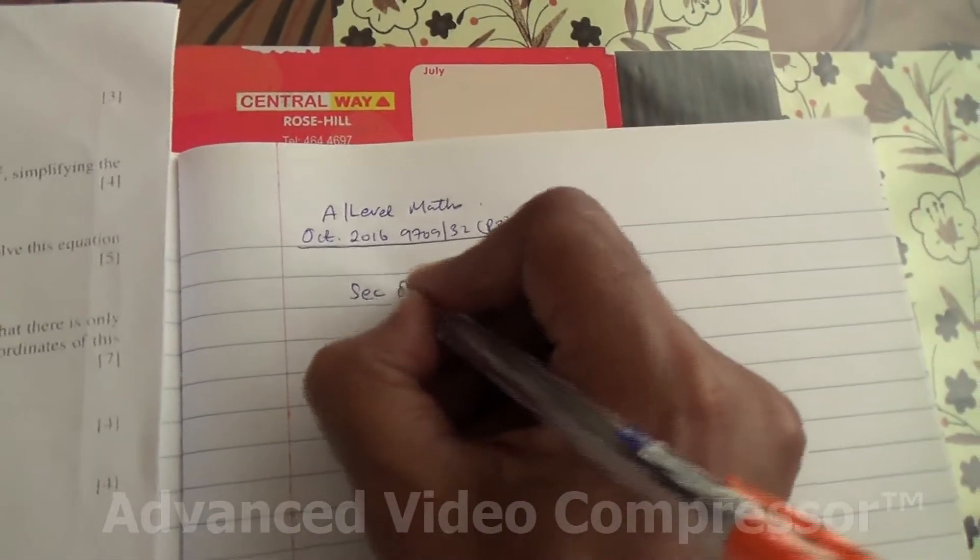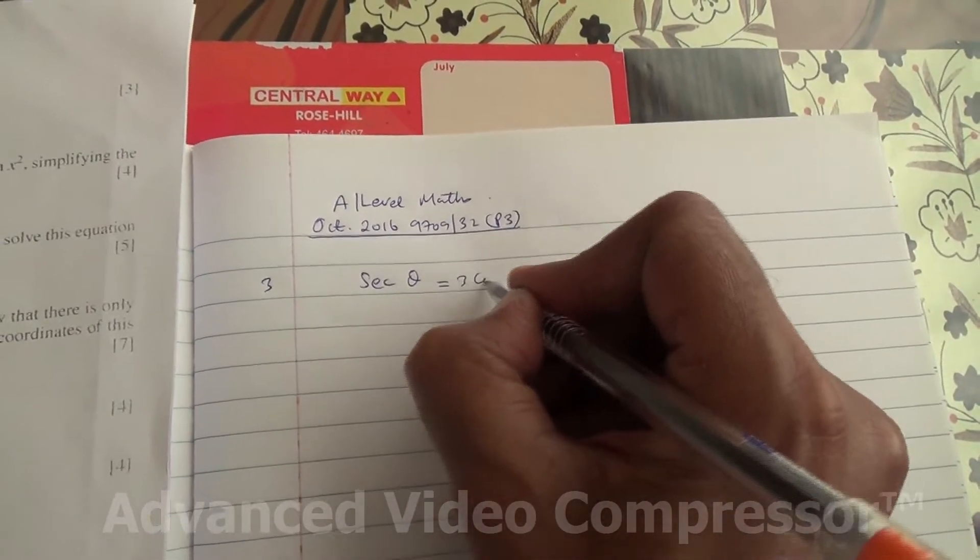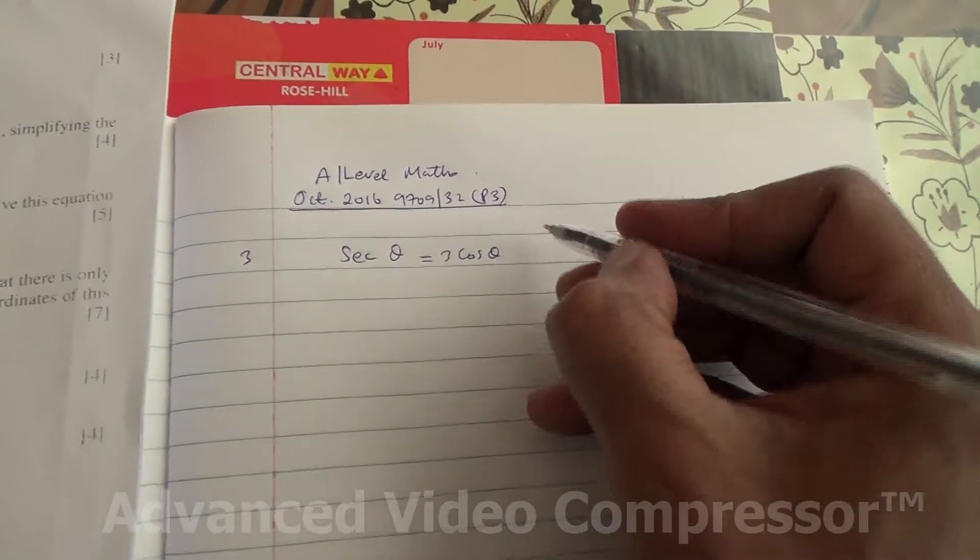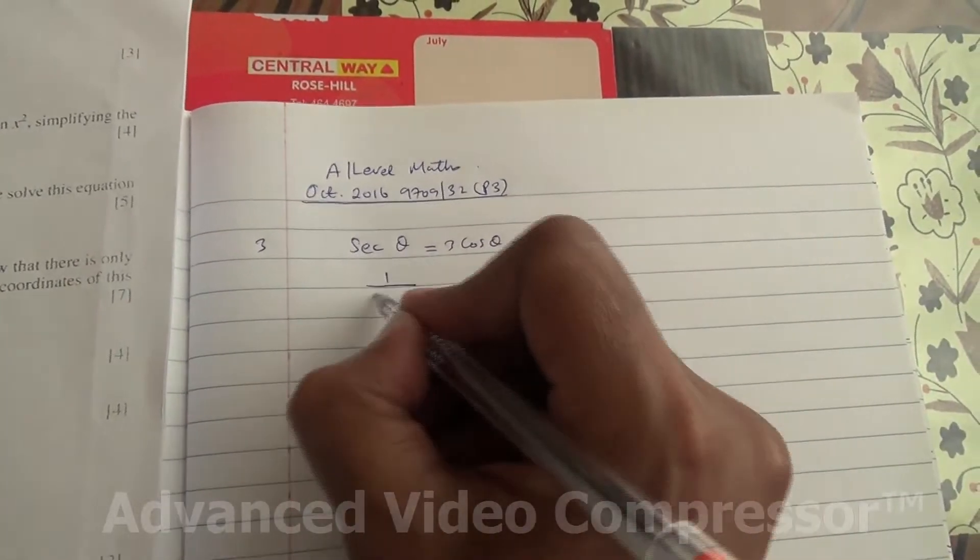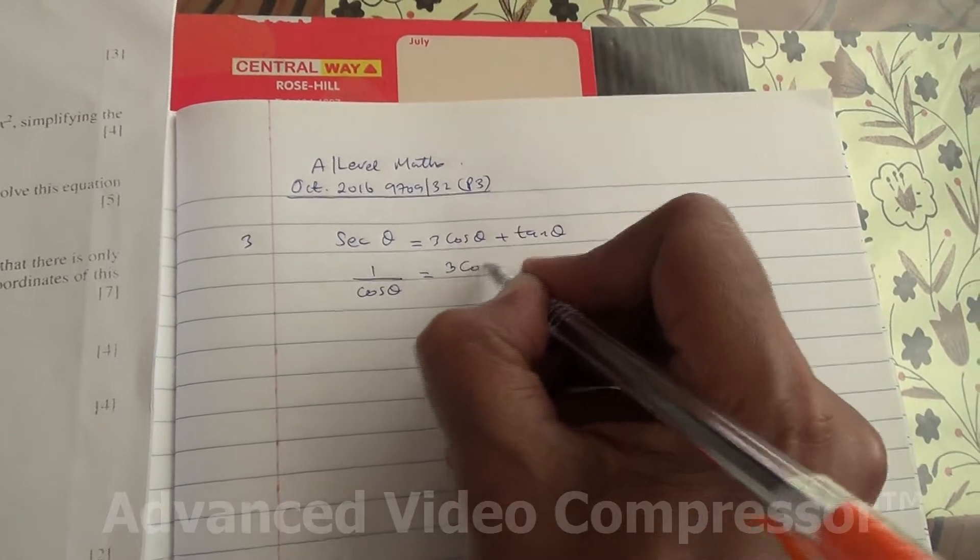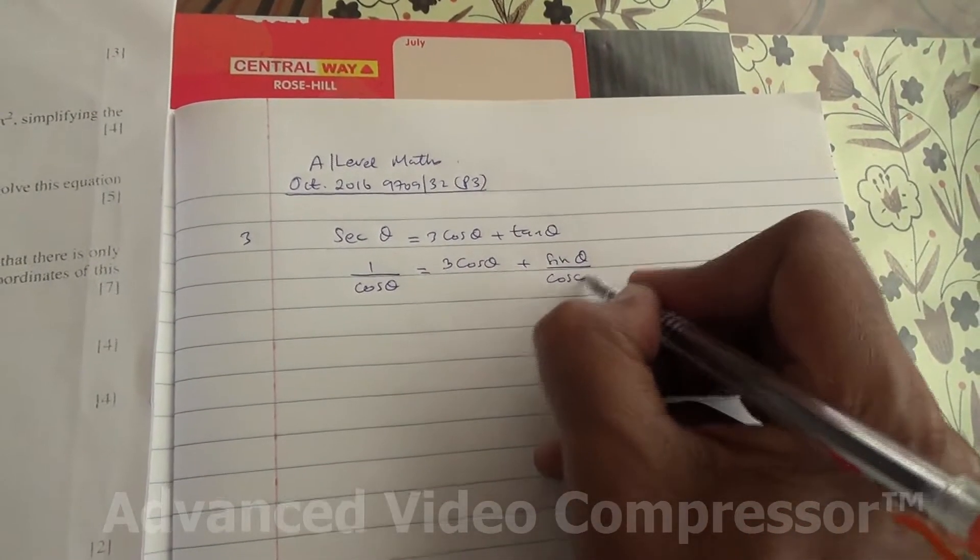So this question now, we've got sec theta is equal to 3 cos theta plus sin theta over cos theta. So sec is 1 over cos, is equal to 3 cos theta plus sin theta over cos theta.